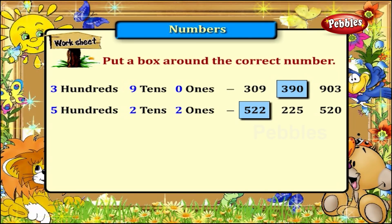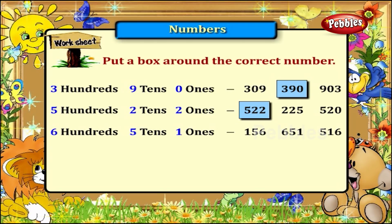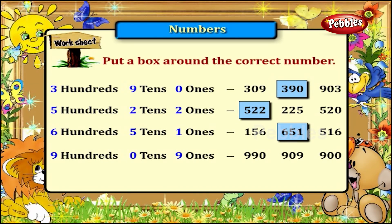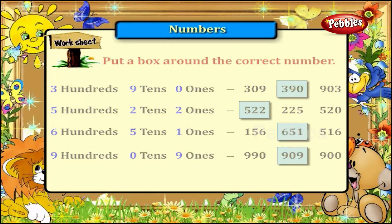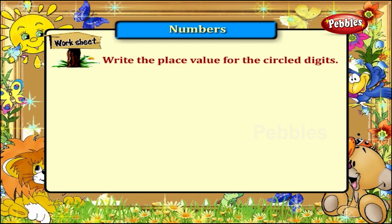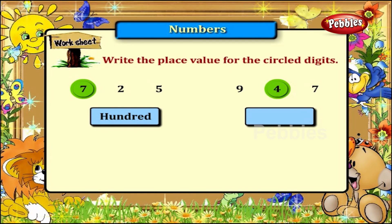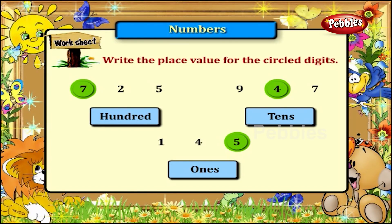Five hundreds, two tens, two ones is five hundred and twenty-two. Six hundreds, five tens, one one is six hundred and fifty-one. Nine hundreds, zero tens and nine ones is nine hundred and nine. The place value for the circled digits: seven is in the hundreds place, four is in the tens place, and five is in the ones place.